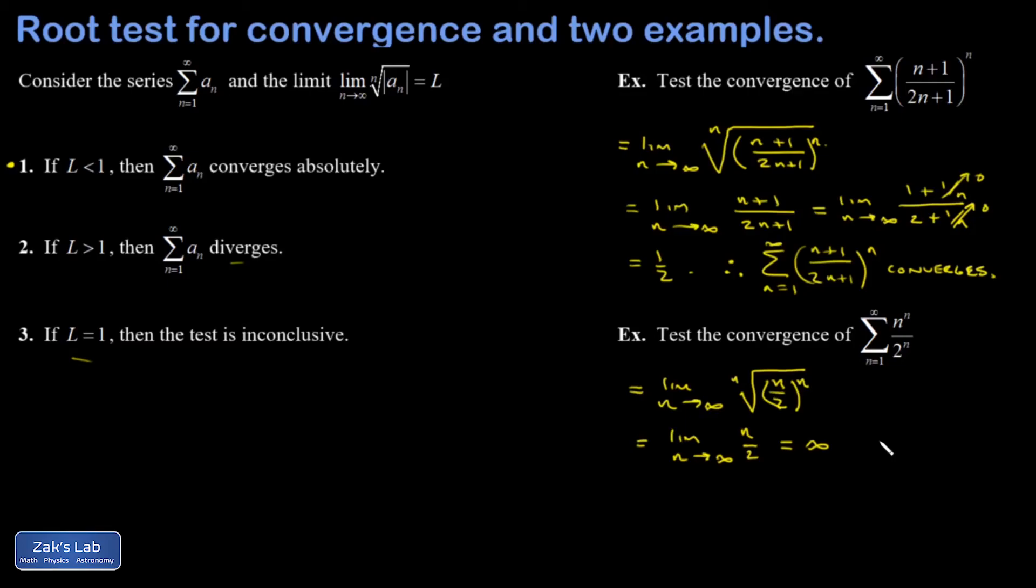Now, an interesting point about this series is we should have seen that it diverged from the very beginning, just by using the divergence test. It's one of the first tests that we saw in the series chapter. If the terms in a series don't go to 0, then the series definitely blows up. And if I just look at these terms and just look at the limit of that.